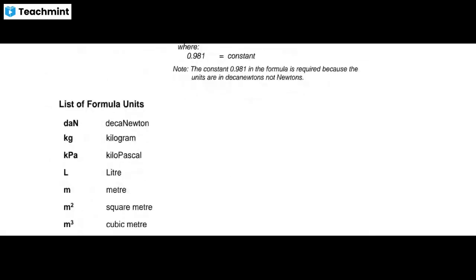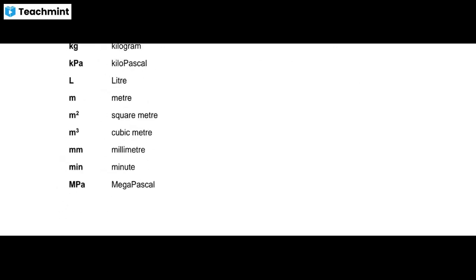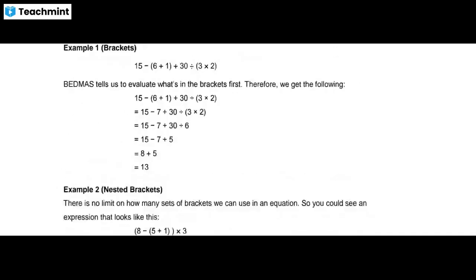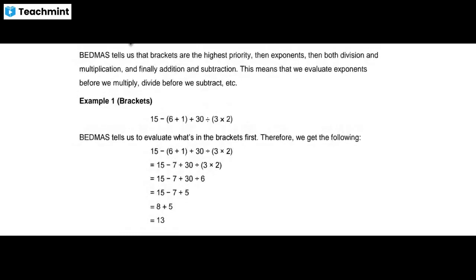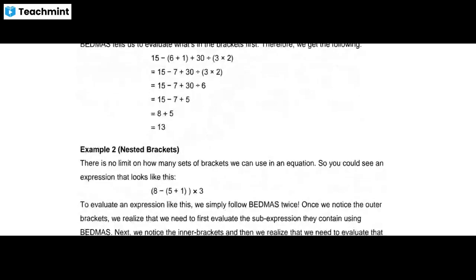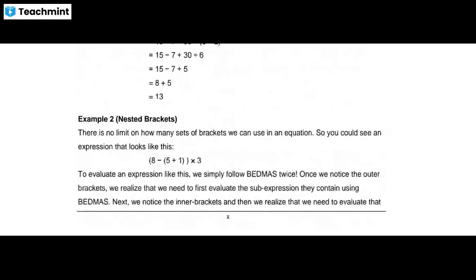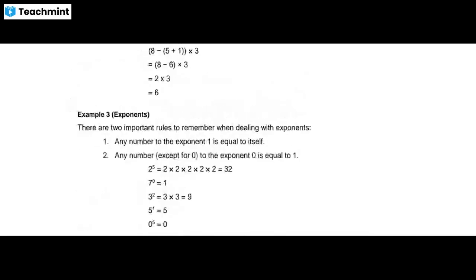The list of formula units includes: decanewton, kilogram, liter, meter, square meter, cubic meter, and megapascal. There is an example of brackets — bed mass — showing that brackets have the highest priority. You can see the brackets formula example with nested brackets.